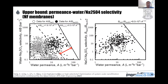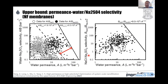In addition to the upper bound for RO membranes focusing on water permeance and sodium chloride selectivity, we can do something similar for nanofiltration membranes — constructing not only water permeance versus water-salt selectivity, but also salt-salt selectivity, such as monovalent-to-divalent ion selectivity versus water permeance.